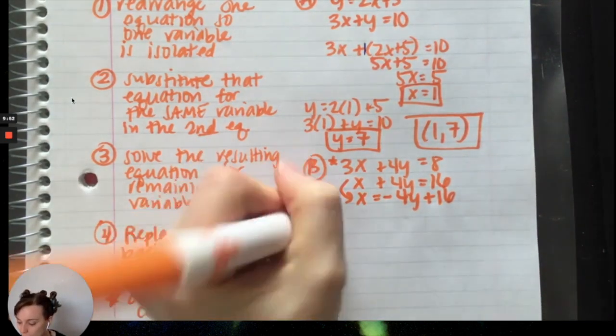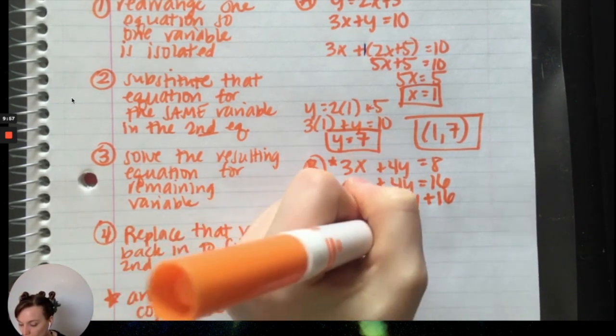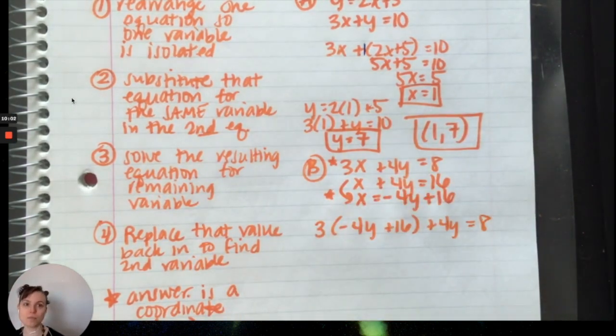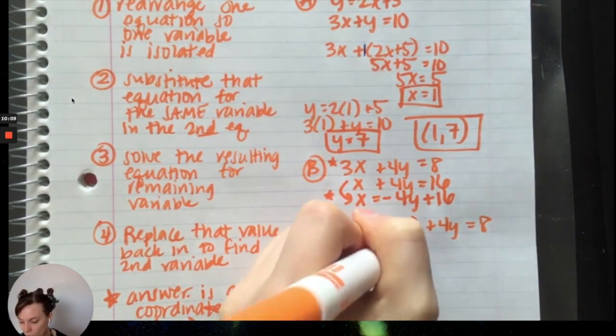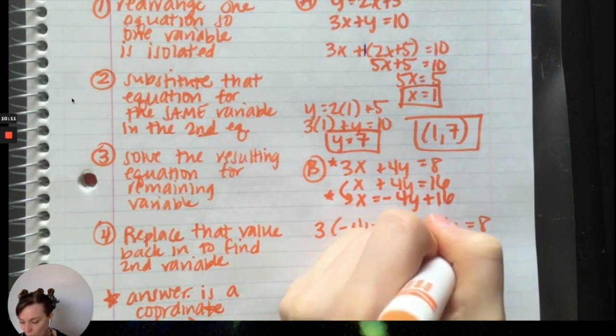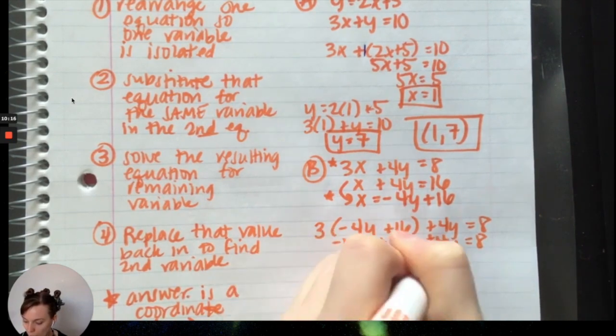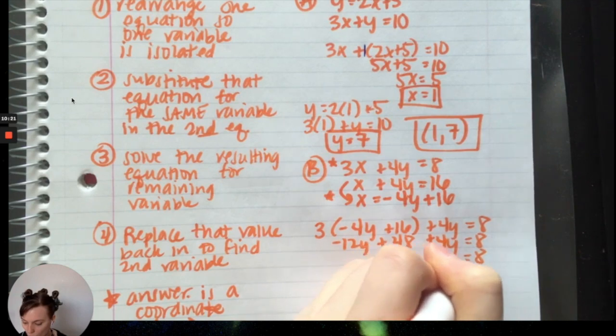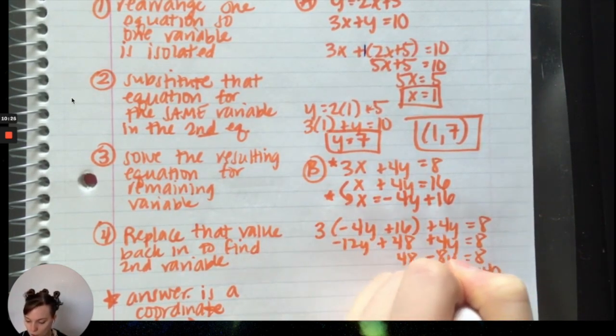X is now equal or synonymous with negative 4Y plus 16. That means I can substitute it. So wherever I see an X, I'm going to replace it with 3 times negative 4Y plus 16 plus 4Y equals 8. Now I'm going to distribute that 3, so I get negative 12Y plus 48 plus 4Y equals 8. Combine like terms, so I get 48 minus 8Y equals 8. Subtract the 48, so I get negative 8Y equals negative 40. Divide by negative 8 equals positive 5.